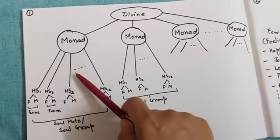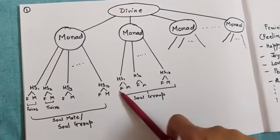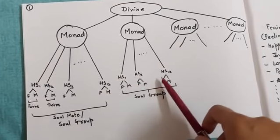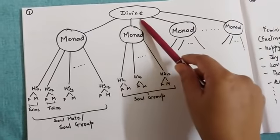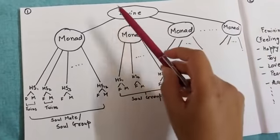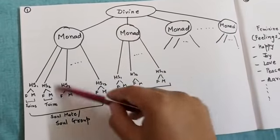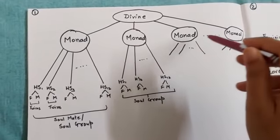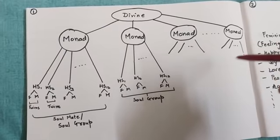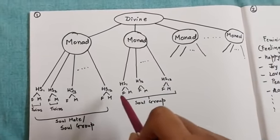So likewise, this is a group of your soulmates, this is another group of your soulmates or soul groups, and these are twin flames under each monadic hierarchy. There are multiple monadic hierarchies that branch out from our divine source. This is the soul anatomy. The basic was necessary because the topic I'm moving into will require understanding of what are soulmates and twin flames and how they were created.